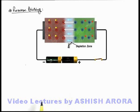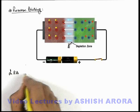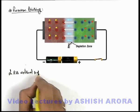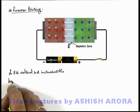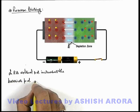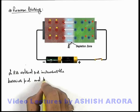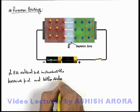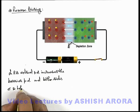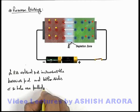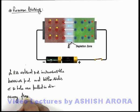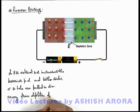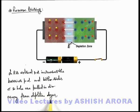About reverse biasing we can write that: in reverse biasing, the external potential difference increases the barrier potential difference. On both sides of the junction, electrons and holes are pulled in a direction away from the depletion layer, due to which the width of the depletion layer increases and the current is negligible.